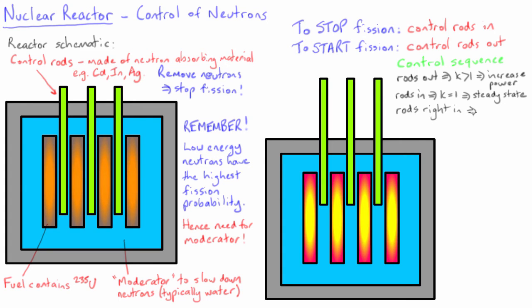When you want to turn the reactor off, you push the rods all the way in so that k is less than 1 and the fission rate dies down.